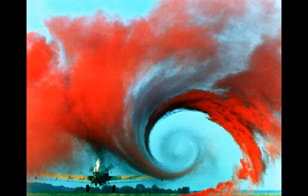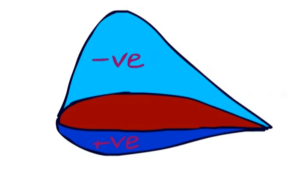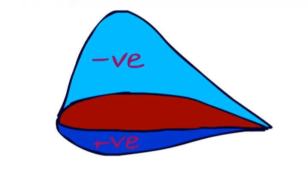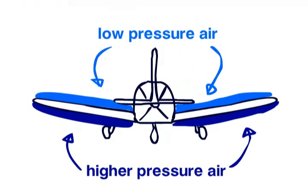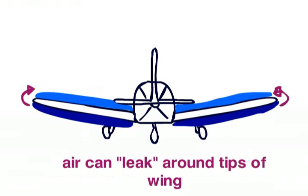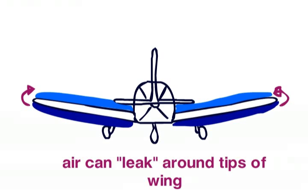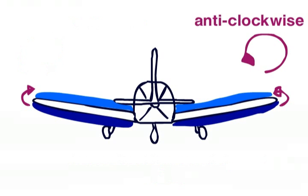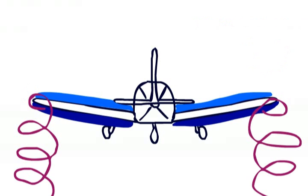Next, induced drag. Induced drag is caused by wingtip vortices. These are caused by the difference in air pressure below and above the wing, as you will remember from the creation of lift video. At the tips of the wing, the higher pressured air below the wing can go round the tip to satisfy its insatiable urge to get with the lower pressure air on top of it. This creates a circular motion of air at the tips of the wings — clockwise on the left, anticlockwise on the right. The vortices that this action creates affect the air around it.